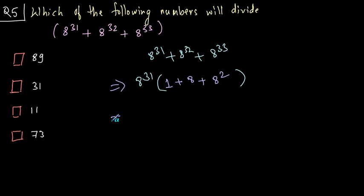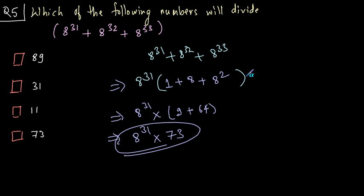Again evaluating 8 raised to 31 into we have 1 plus 8 is 9 plus 8 square is 64. We get 8 raised to 31 into 73. This expression is divisible by 73. So the answer is 73. So that was easy.